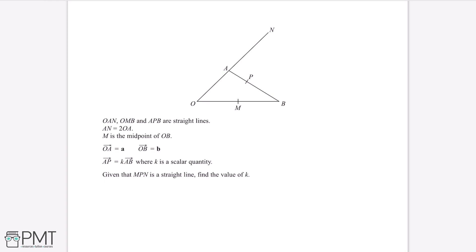The first thing we can do is annotate the diagram with the information given. We've been told that AN is equal to 2OA and OA is equal to A. So therefore AN is equal to 2A, which means the full line OAN is equal to 3A. Next, we've been told that M is the midpoint of OB and OB is equal to B. So OM will be equal to half B, and MB will also be equal to half B.